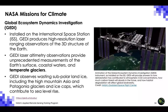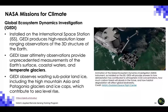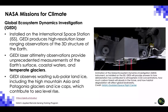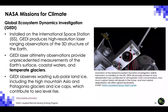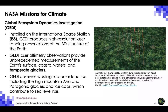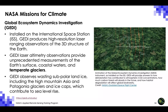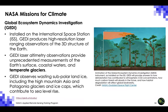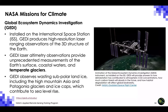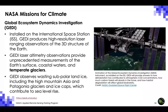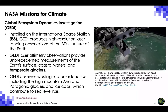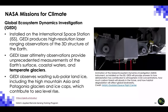Installed on the International Space Station, the Global Ecosystem Dynamics Investigation (GEDI) instrument produces high-resolution laser-ranging observations of the three-dimensional structure of the Earth. GEDI laser altimetry observations provide unprecedented measurements of the Earth's surface, coastal waters, and temperate glaciers, and observes wasting subpolar and land ice, including high mountain Asia and Patagonia glaciers. The science of GEDI centers on three key questions: What is the carbon balance of the Earth's forests? How will the land surface mitigate atmospheric CO2 concentrations in the future? And how does forest structure affect habitat quality and biodiversity?